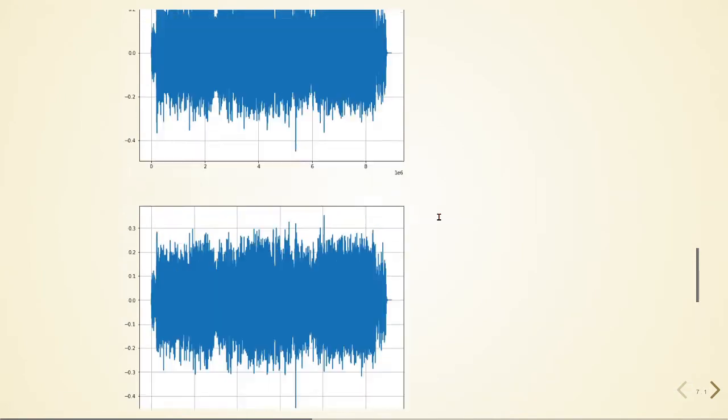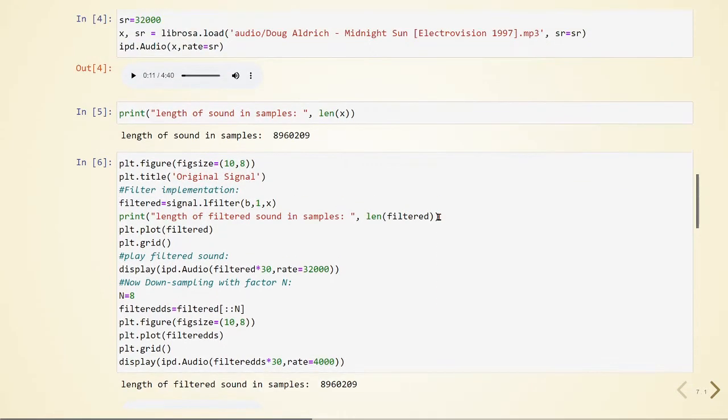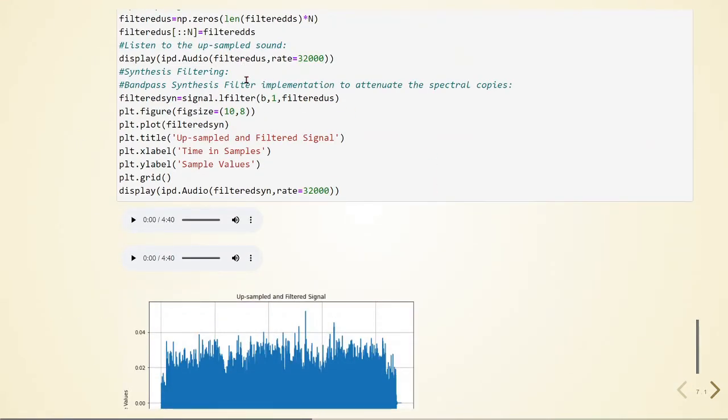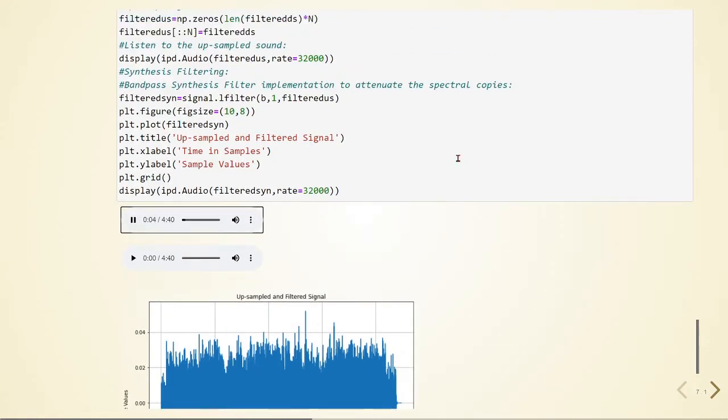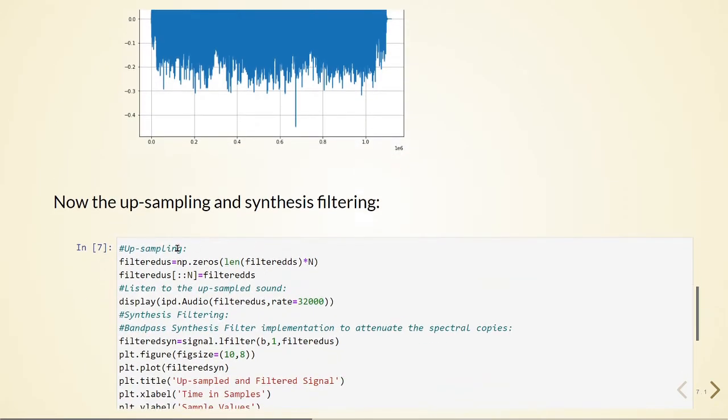The same filter what we used before. And then we can listen. So this is the upsampled version before synthesis filter. This is what we are playing here. And we see that the upsampled again is 32 kHz.